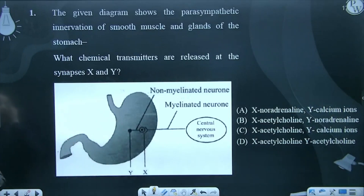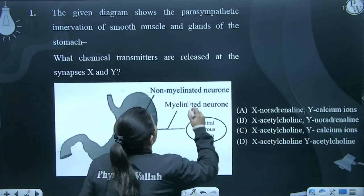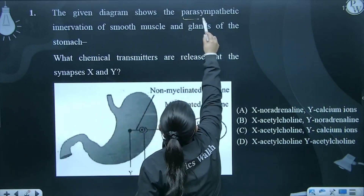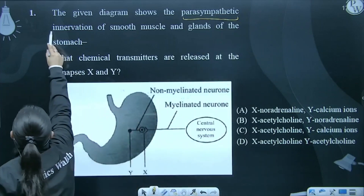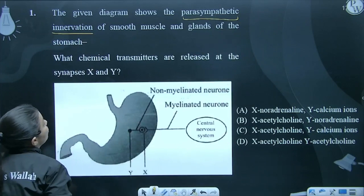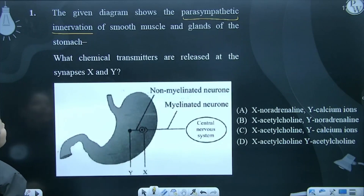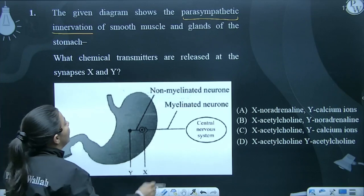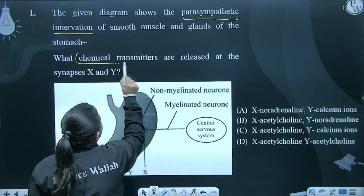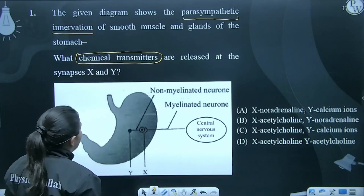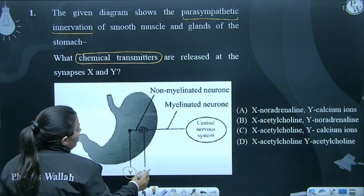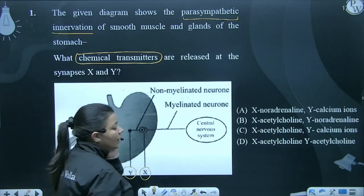Question No. 1. The given diagram shows the parasympathetic innervation — that means, the diagrammatic representation below is the parasympathetic innervation of nerves in smooth muscle and glands of the stomach. What chemical transmitters are released at synapses X and Y, which are labeled in the diagram?